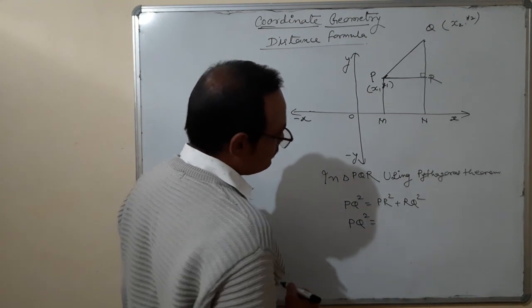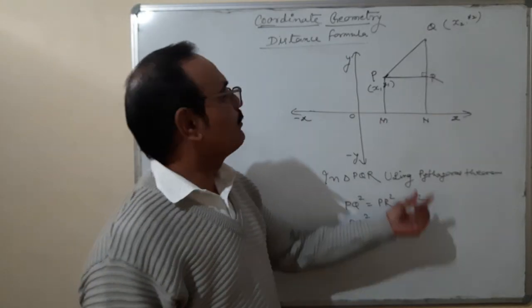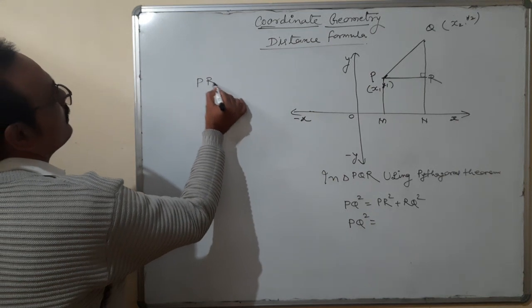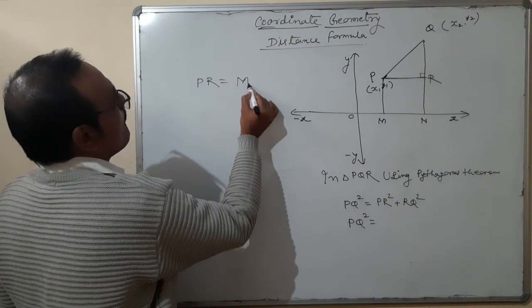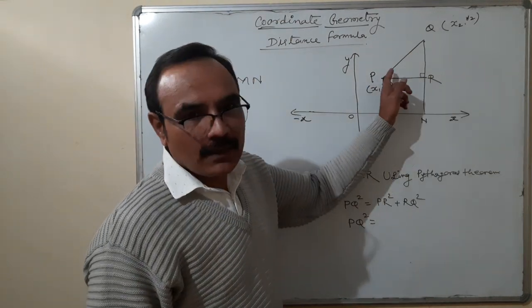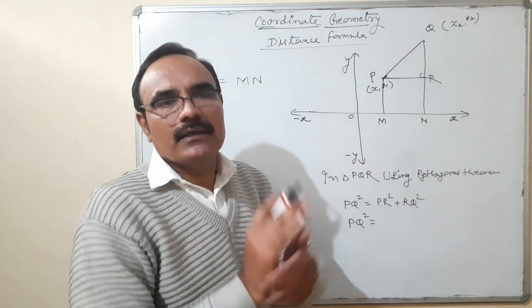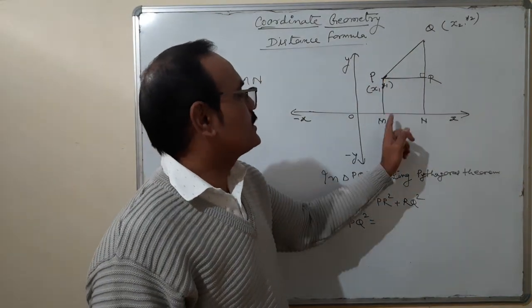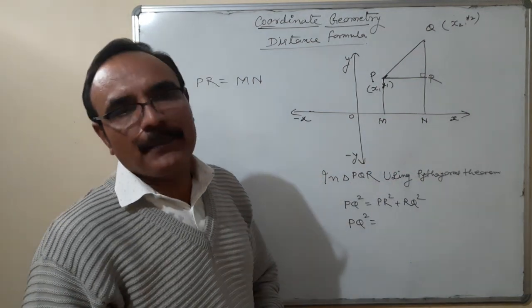Now let us discuss the values of PR and RQ. PR is equal to MN, because it becomes a rectangle — opposite sides are equal. We drew two perpendiculars on the x-axis, each angle is 90 degrees, so it is a rectangle. Therefore PR equals MN. Now we are finding the value of MN.